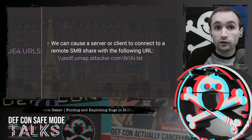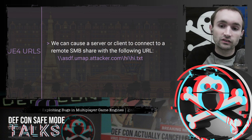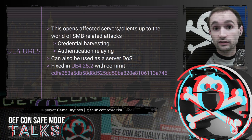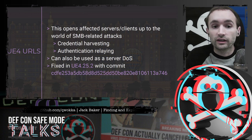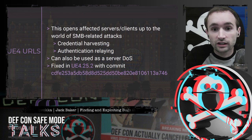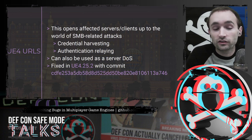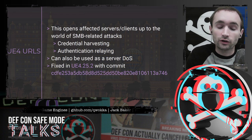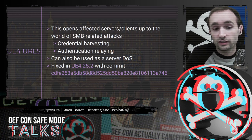This opens up the affected system to SMB-related attacks. When a Windows system connects to an SMB share, it'll try to authenticate, so this can be used for credential harvesting or authentication relaying. It can also be used as a server denial of service, because the whole server will lock up while making the SMB request — deliberately making the connection take a long time can lock up the server for a while. This was fixed in Unreal Engine 4.25.2, and it's easy to backport if you're on an older version.